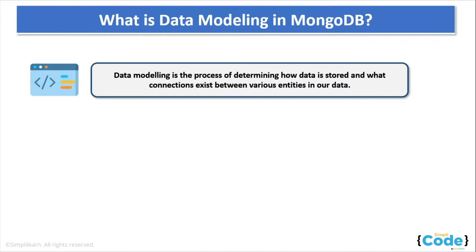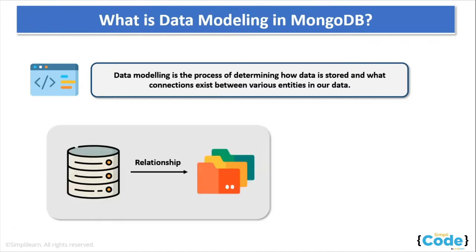Instead, you can store your information and make changes in accordance with your data. MongoDB relationships are the representations of how multiple documents are logically connected to each other. Since MongoDB is a document database, any document within the same collection is not mandatory to have the same set of fields or structure. You can store different types in a collection's given field and can even add new fields, update fields, and delete existing fields as well.